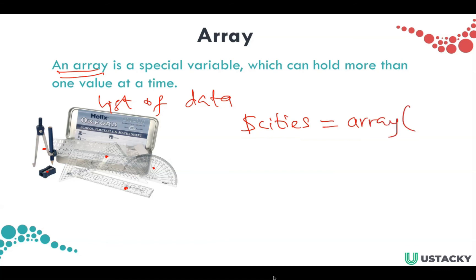For example, we can represent our previous example as $cities equals array, and the contents are: the first one is 'Ikeja', the second one is 'Kano', and the third one is 'Owerri'. So this single variable is now holding a list of data.